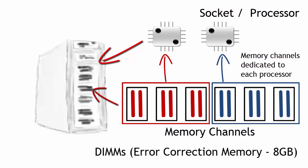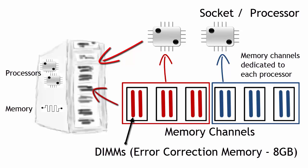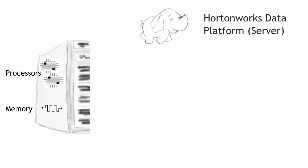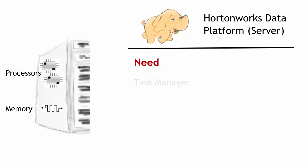Then the memory channels — we want to make sure that there are at least three channels dedicated to each socket, each processor, and that you can fit eight-gigabyte DIMMs within there. So this is a 12-DIMM machine, and you want to make sure you have error correcting on that RAM.